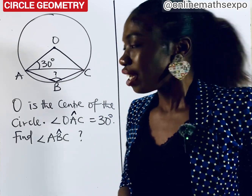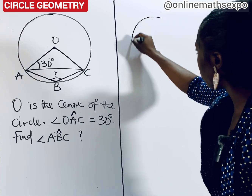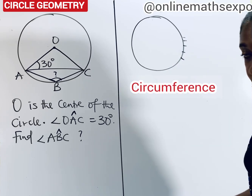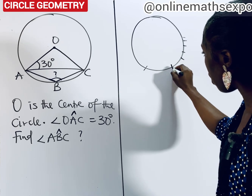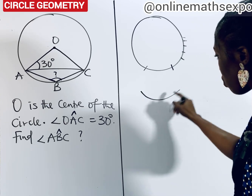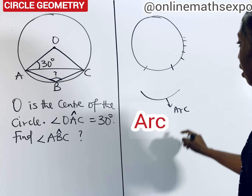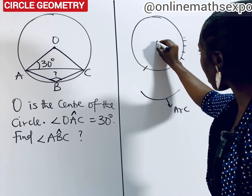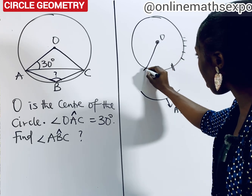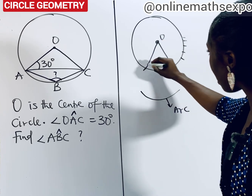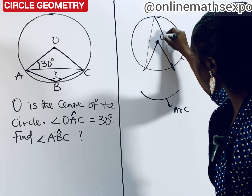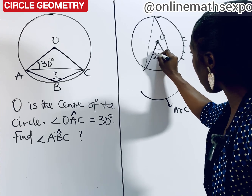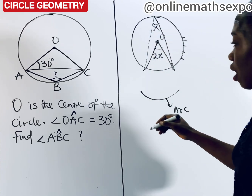Remember this theorem. This is your circle, and the outer part of the circle is your circumference. When you take a part of this circle out, we call it an arc. The theorem says that when you have this arc that makes an angle at the center and makes another angle at the circumference, the angle at the center is related to the angle at the circumference.